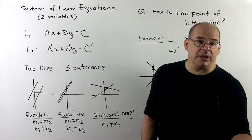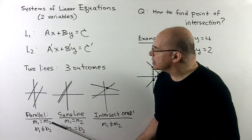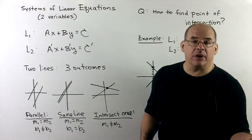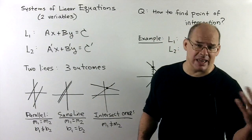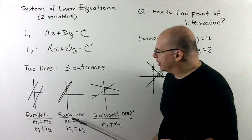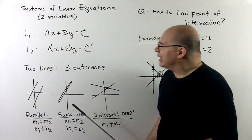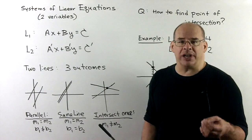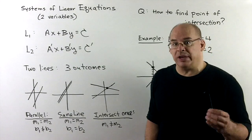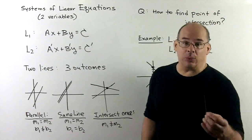Geometrically, if I have two lines in the plane, three things can happen. They can be parallel — same slope but different y-intercept. Or the equations may look different but when cleaned up have the same slope and same y-intercept, giving the same line. We'll count that as a possibility since we may not be able to tell immediately. Finally, if the slopes are different, our two lines will automatically intersect in a single point. That's the main question for this video: if our lines intersect at a single point, how do we find it?